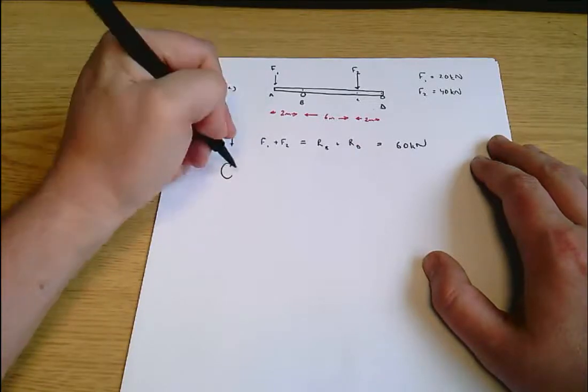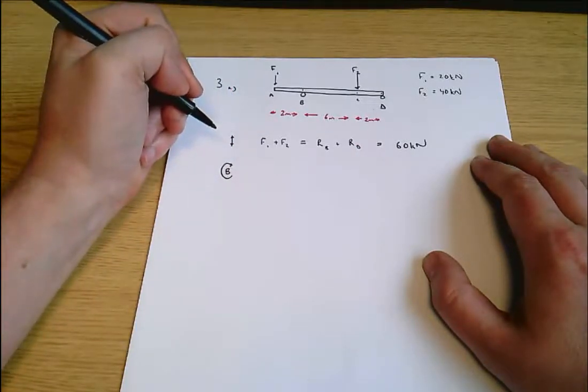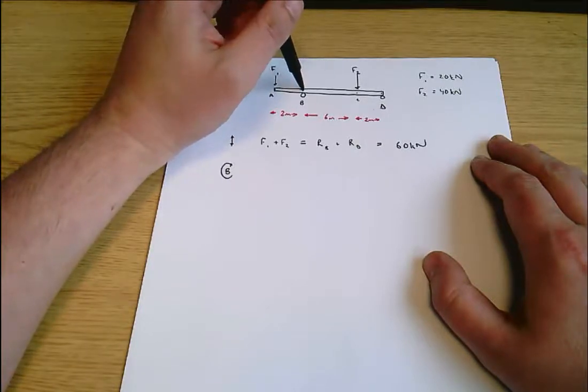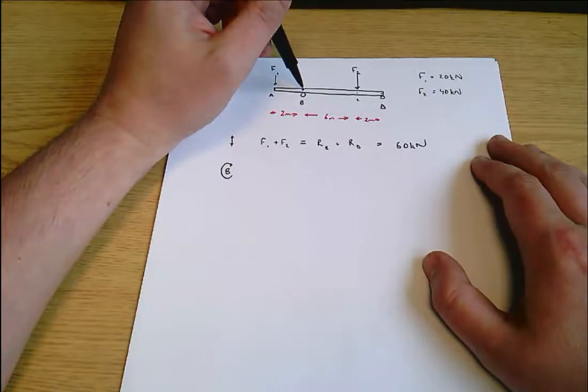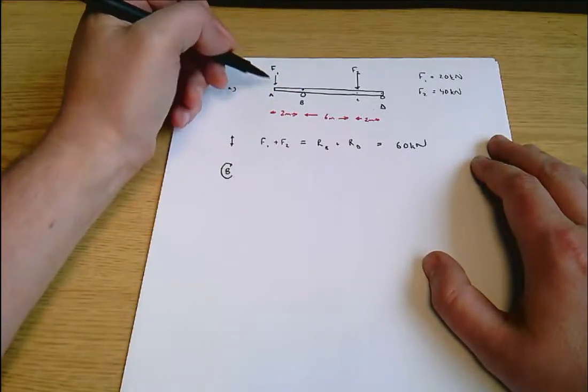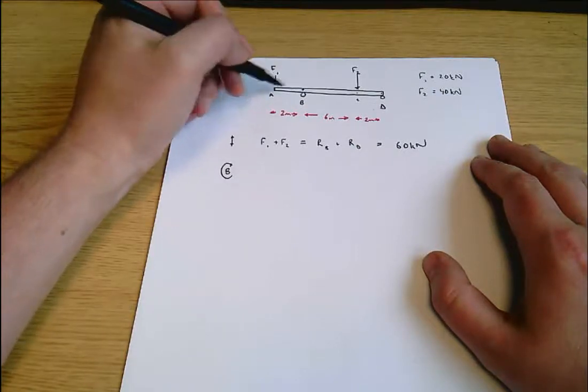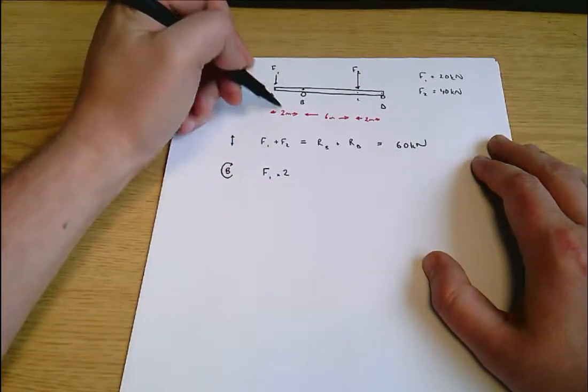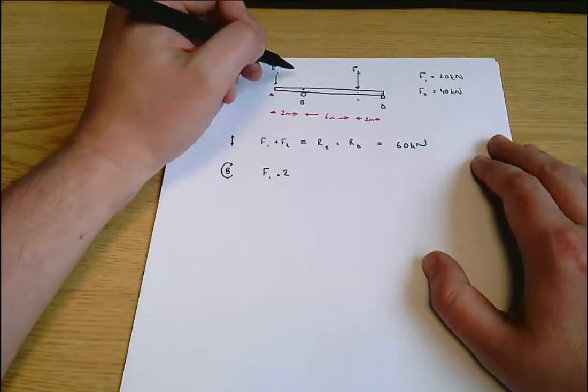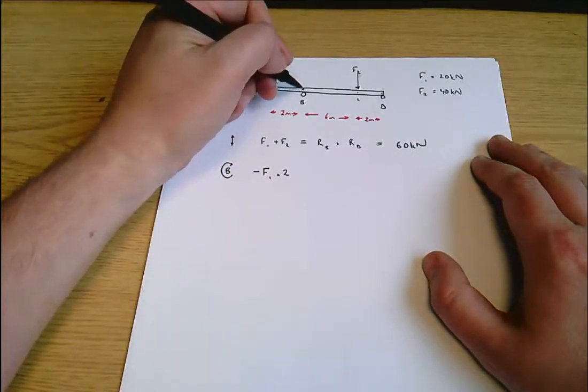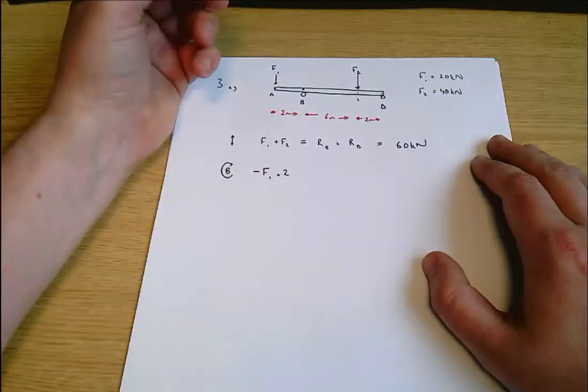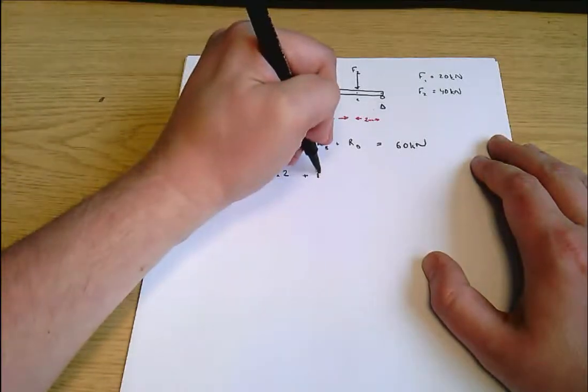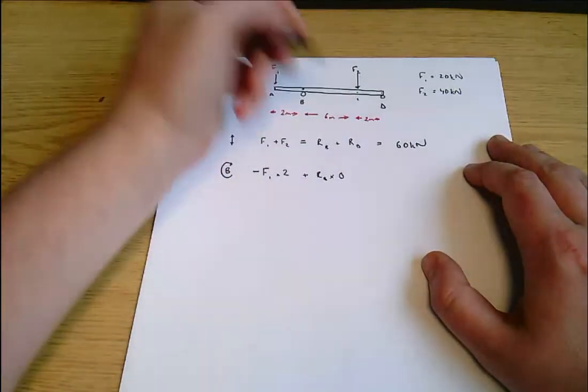This is the notation I'm going to use to say I'm interested in clockwise moments about B. Now what I have to do is find for each of the forces involved the distance from B and the magnitude of the force, multiply those together and add them up and say they sum to zero. So F1 acts two meters away from B, so F1 times two. It's tending to cause an anti-clockwise rotation about B, so we're going to make that negative.